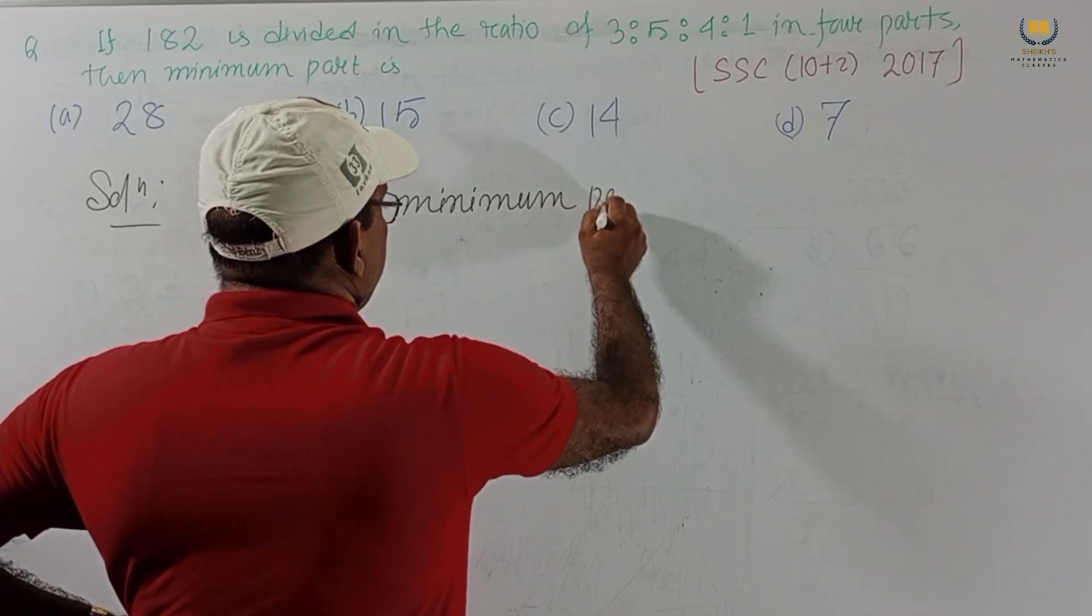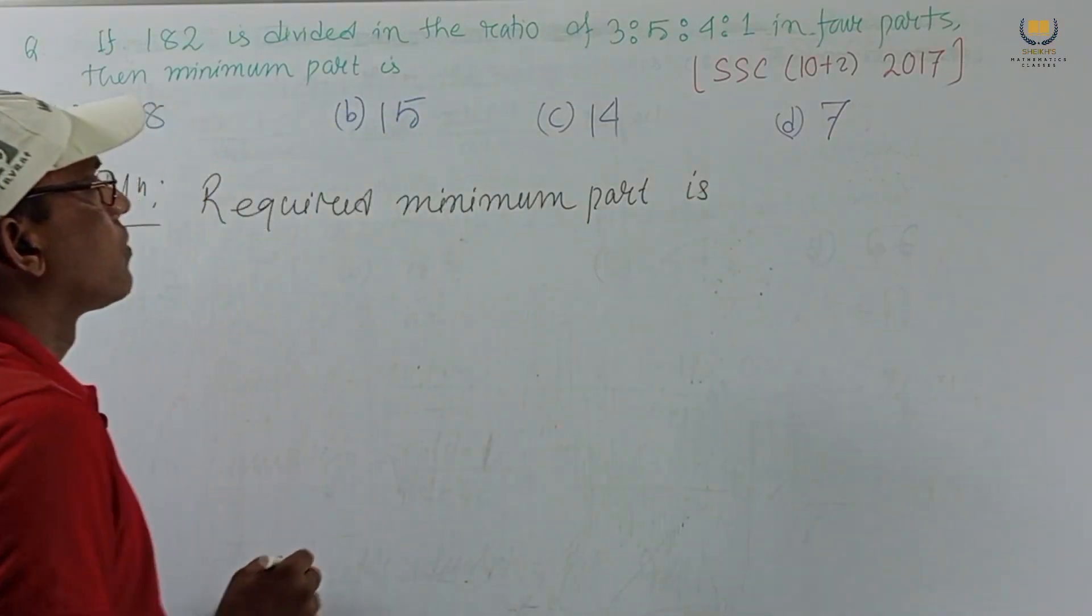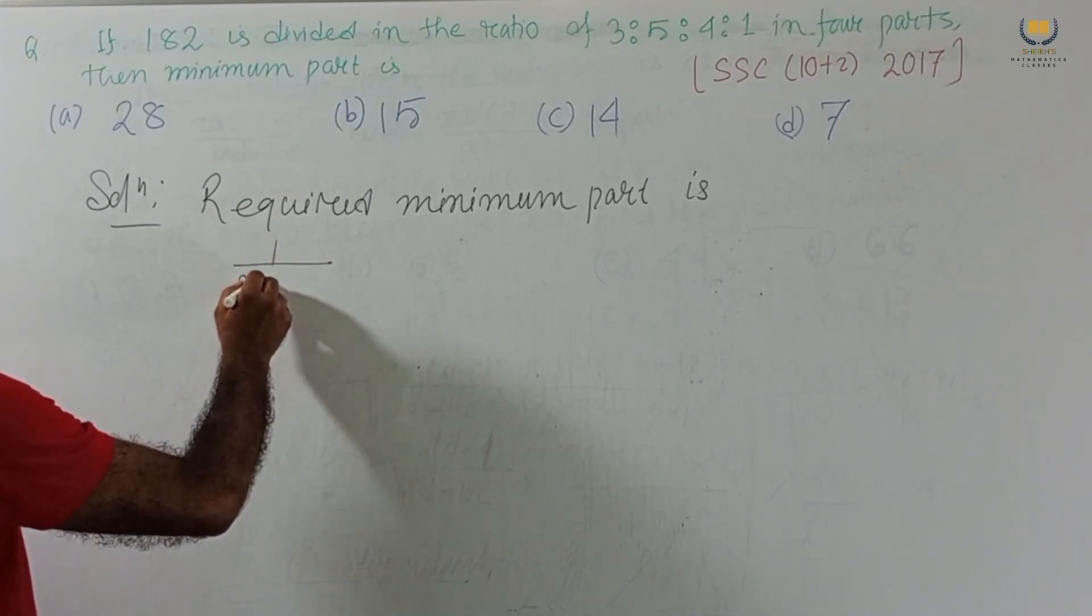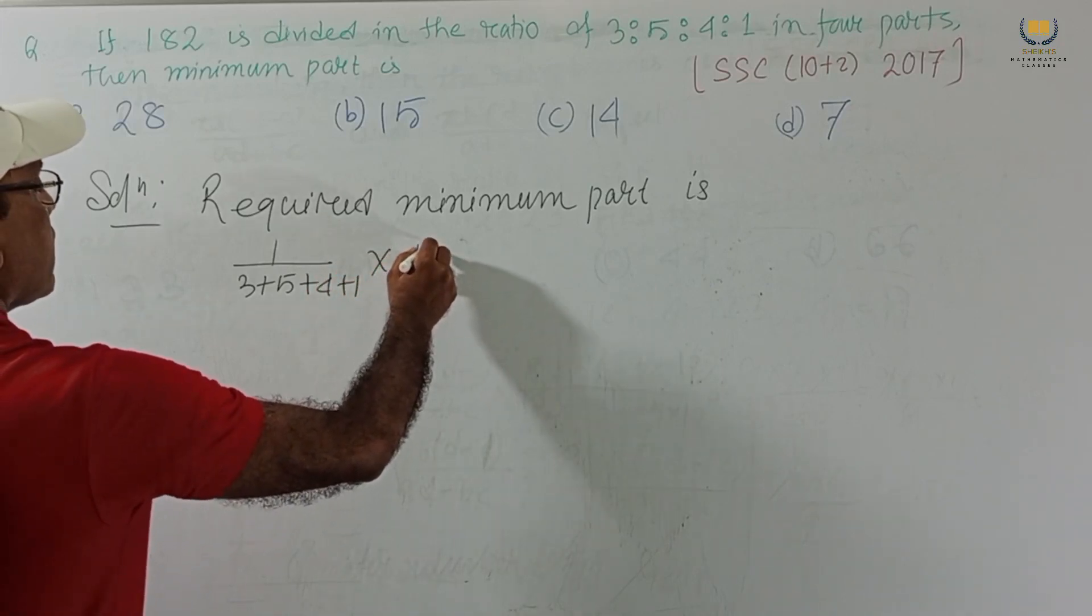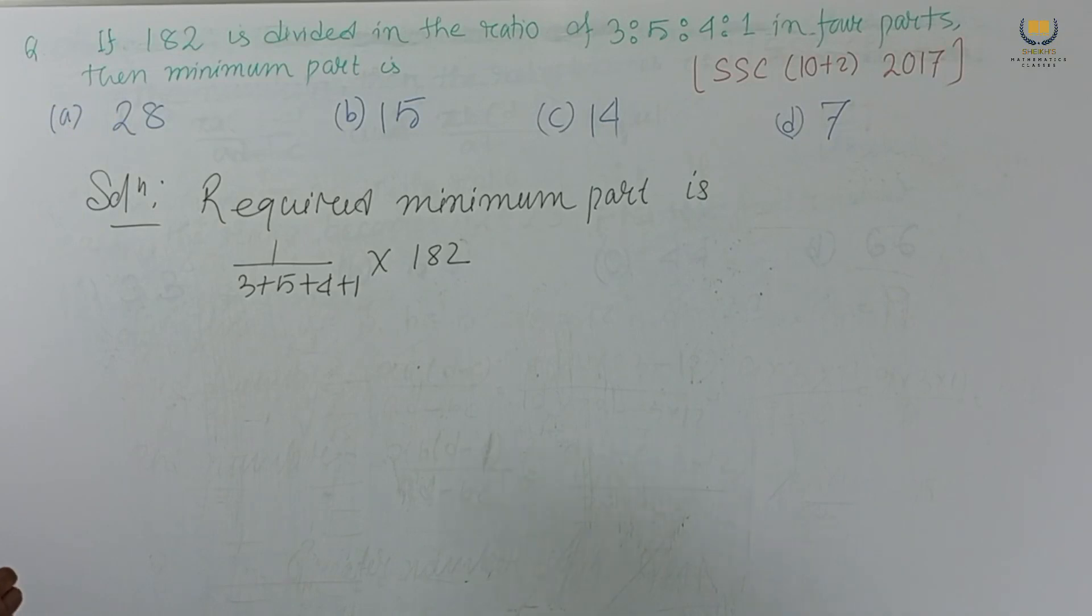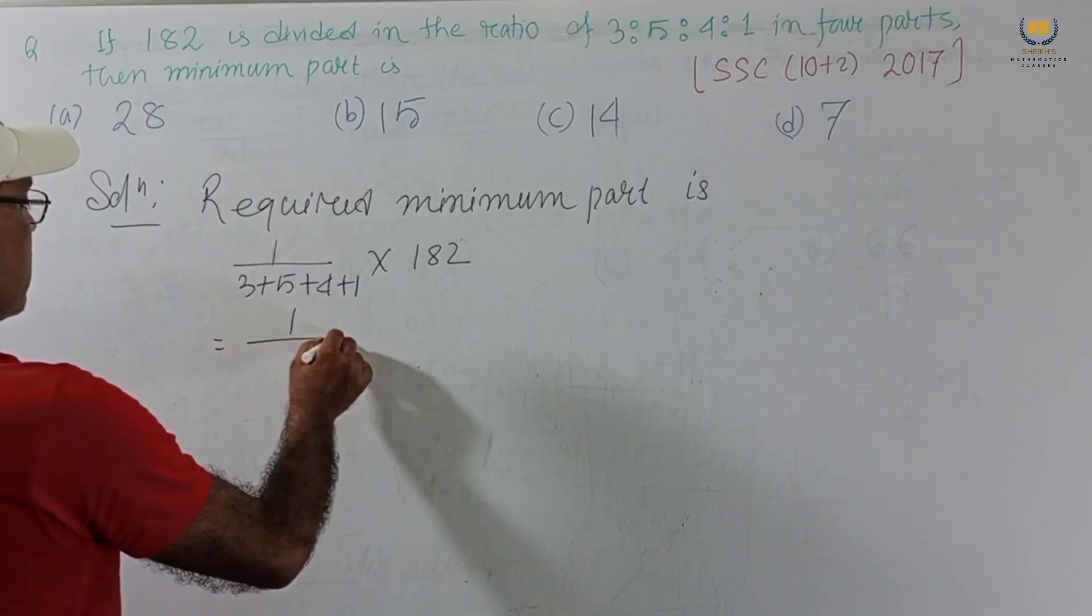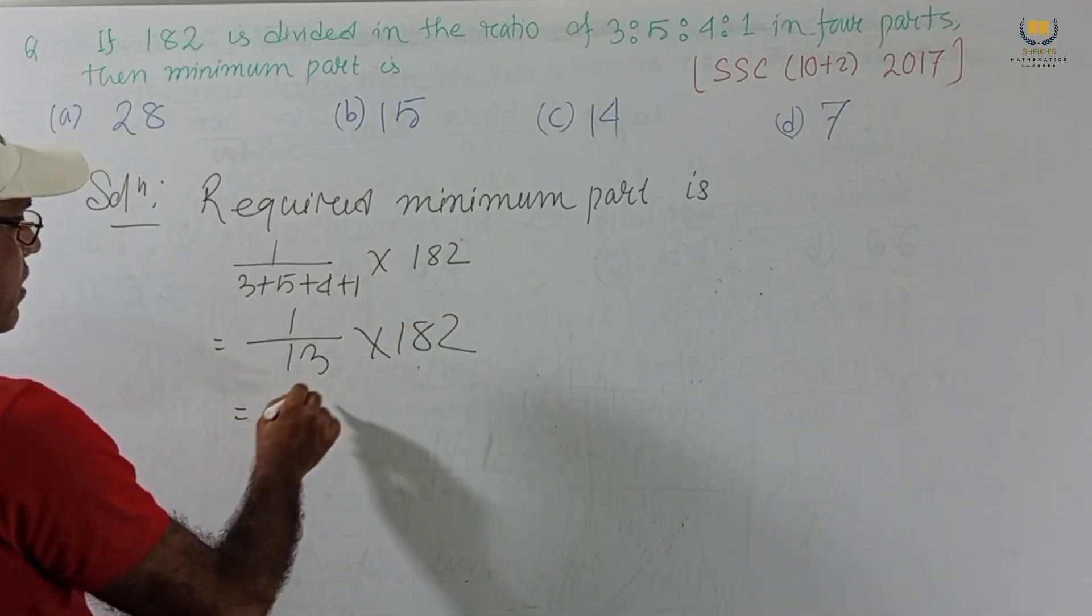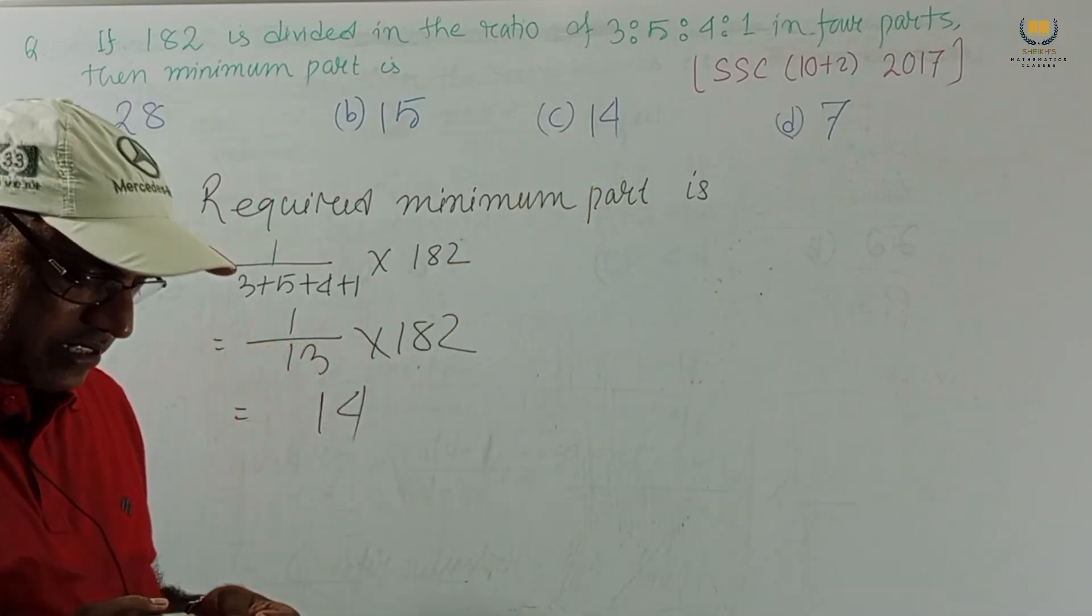Required minimum part. Minimum part is - this is 1 is minimum - 1 by (3+5+4+1) into 182. Directly 1 by this. And this will be 13 into 182. And if we divide, this is 14. We get 14. The minimum number is 14. Option C is our correct option. This is a very easy solution.